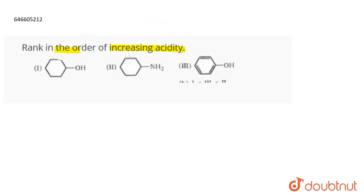If you have to rank them in the order of increasing acidity, then the acidic strength is actually proportional to the stability of their conjugate bases. More stable is the conjugate base, more will be the acidity or acidic strength.